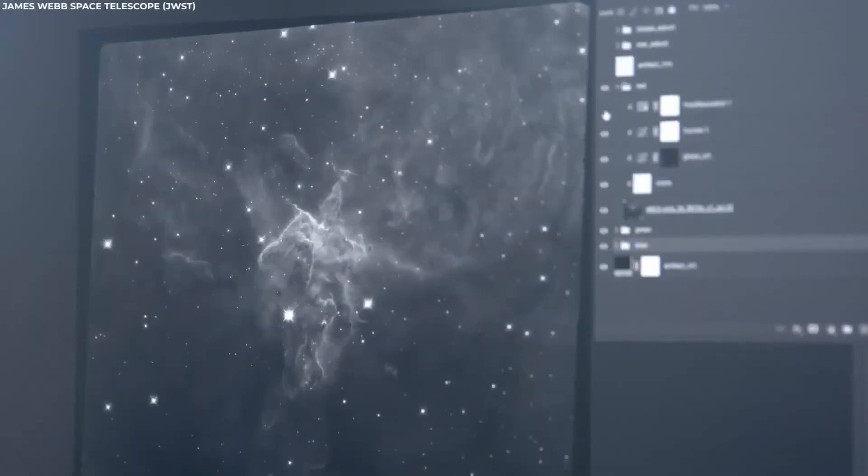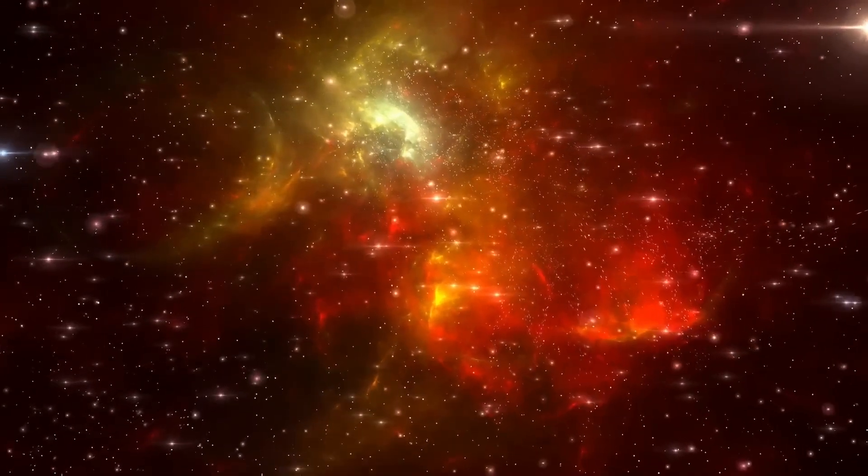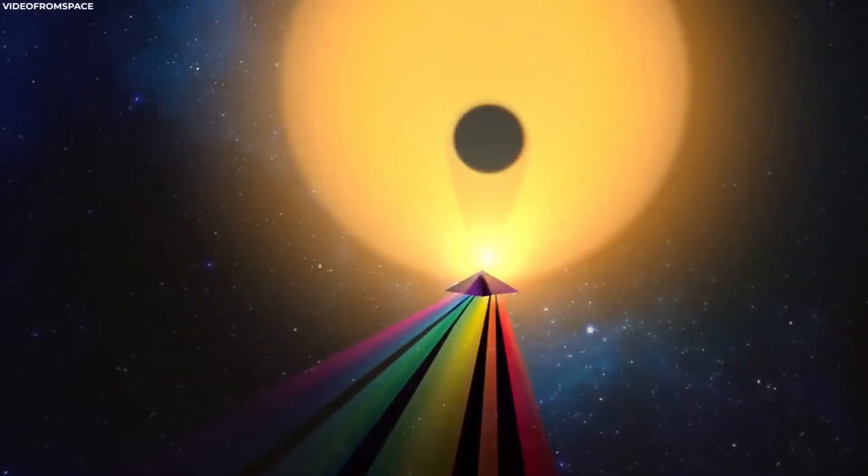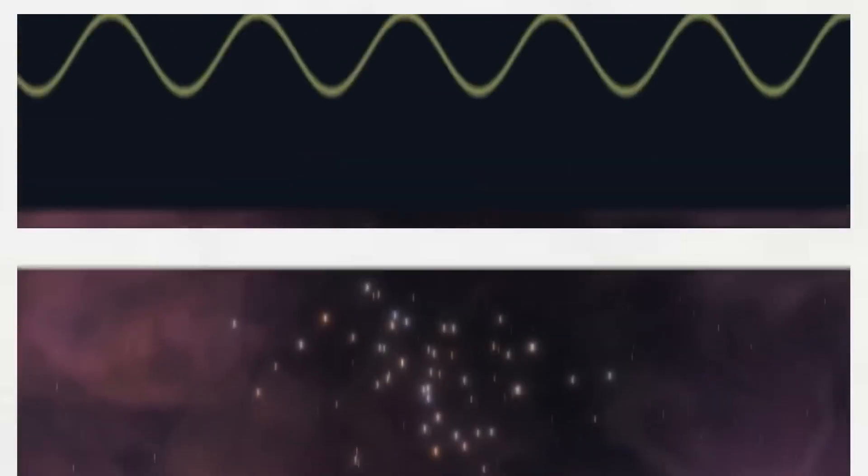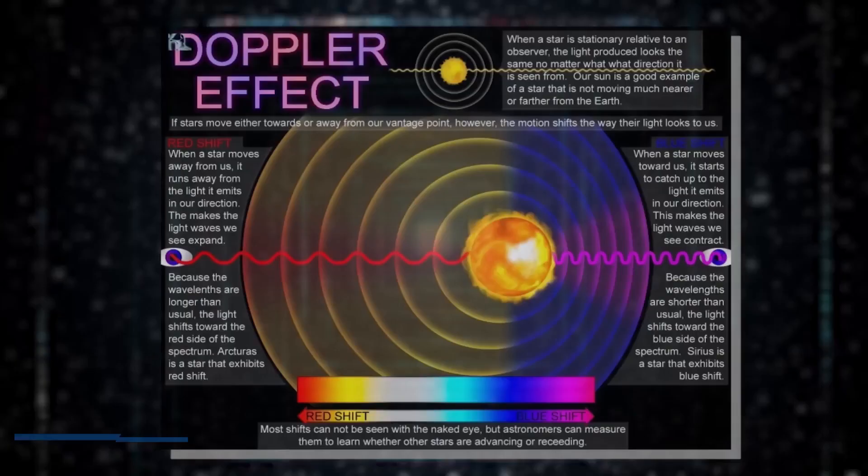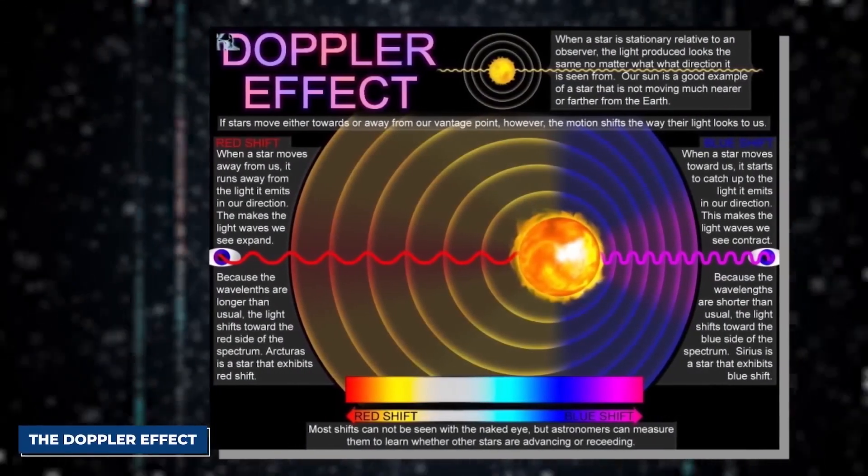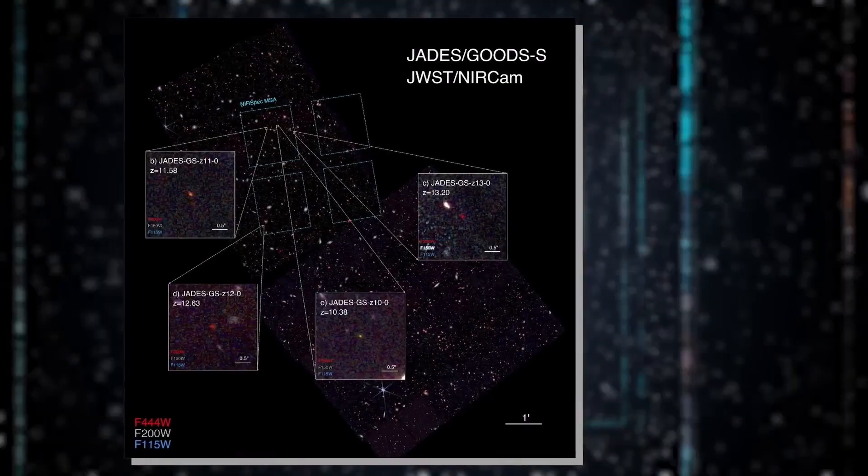Among the newly discovered galaxies, four stand out with redshifts greater than 10, indicating their immense distance from us. Previously, the Hubble Space Telescope had spotted two of these galaxies, confirming redshifts of 10.38 and 11.58. JWST, however, revealed two even more distant galaxies, with redshifts of 13.20 and 12.63. The 13.2 redshift takes us back about 13.5 billion years, offering a glimpse into the universe's infancy.